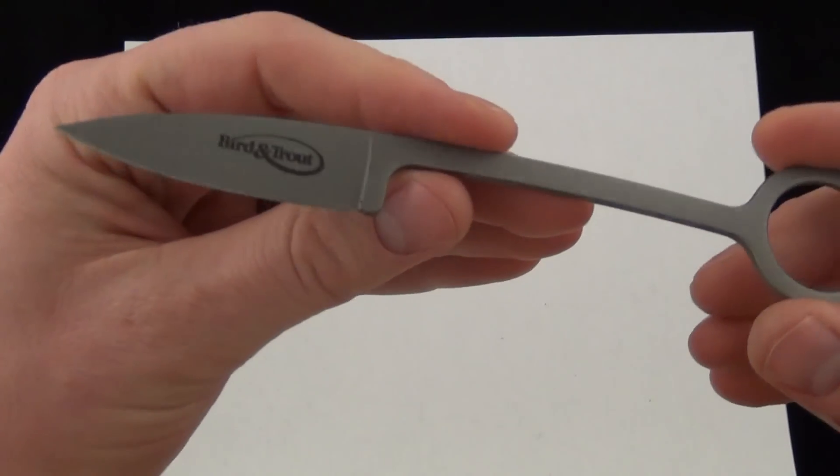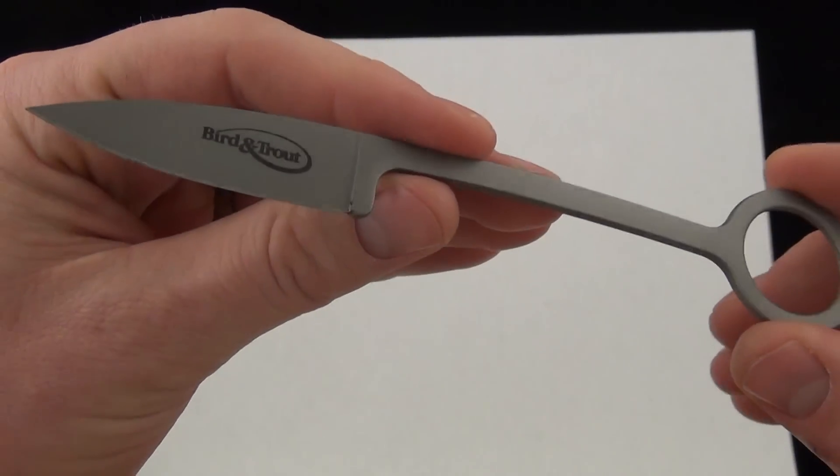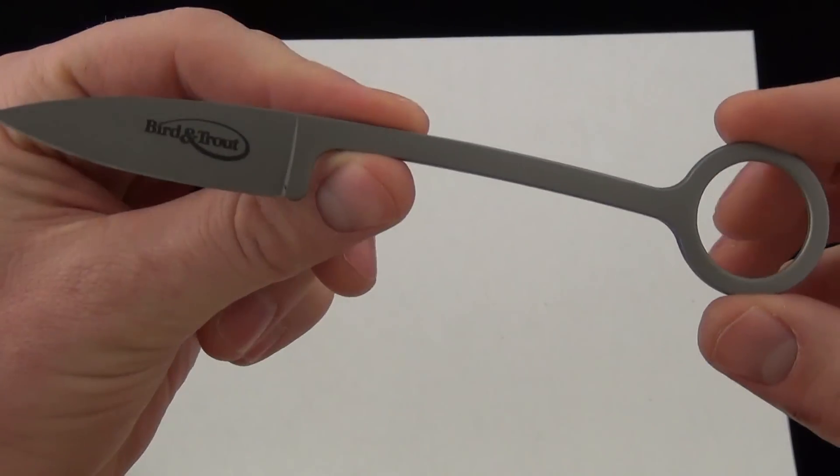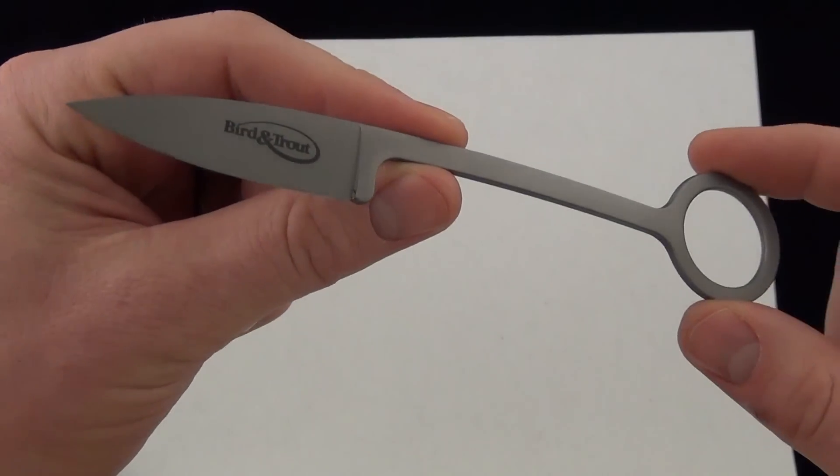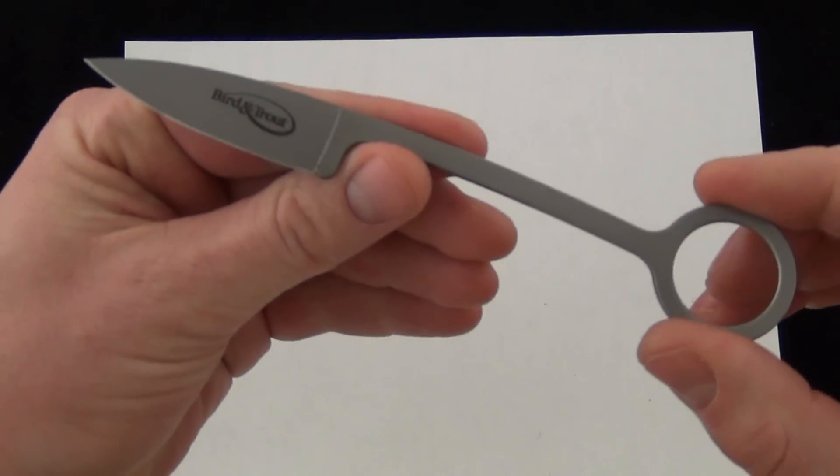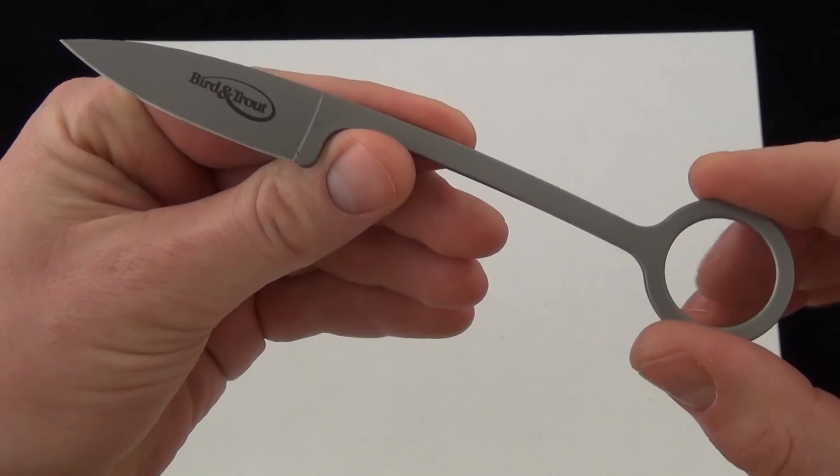So a few good uses for the Cold Steel Bird and Trout knife. Overall excellent blade. It's inexpensive. You could do a lot with it. But comment down below. Let me know what you think about using it for Bird and Trout. And also in some sort of tactical fashion. But just a little idea. Comment down below. Check it out. Blade Ops.